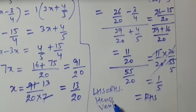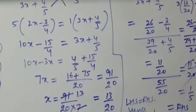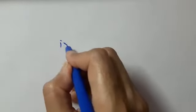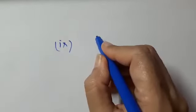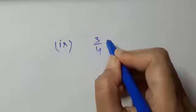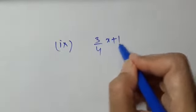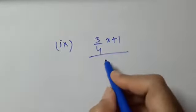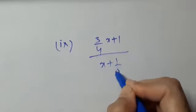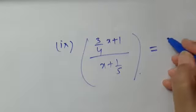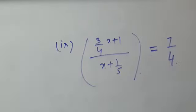Now do the 9th part yourself. The 9th part equation is: 3 upon 4x plus 1 upon x plus 1 upon 5, equals 7 upon 4. Simplify this and tell me what the answer is.